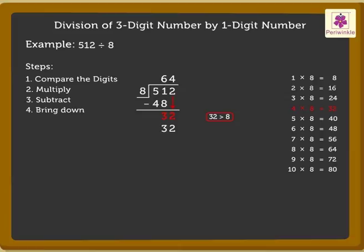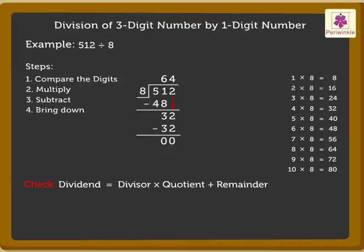Now, subtract 32 from 32, which is equal to 0. Now, it is time to check our calculation using the following relation. Dividend is equal to divisor into quotient plus remainder.